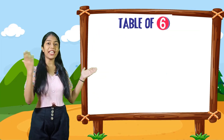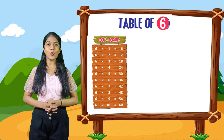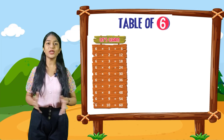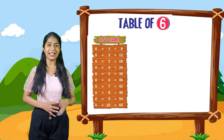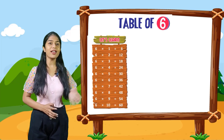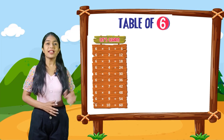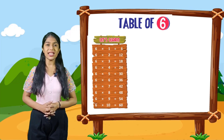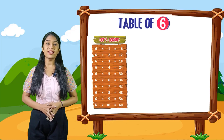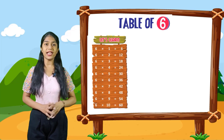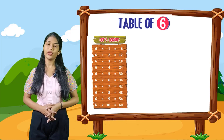So now we will do the table of 6. Let's learn. 6 into 1 is equal to 6. 6 into 2 is equal to 12. 6 into 3 is equal to 18. 6 into 4 is equal to 24. 6 into 5 is equal to 30. 6 into 6 is equal to 36. 6 into 7 is equal to 42. 6 into 8 is equal to 48. 6 into 9 is equal to 54. 6 into 10 is equal to 60.